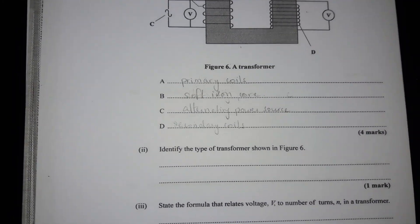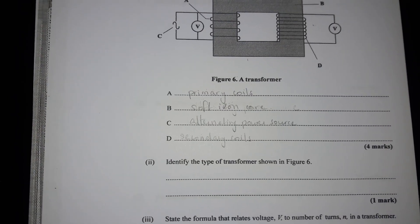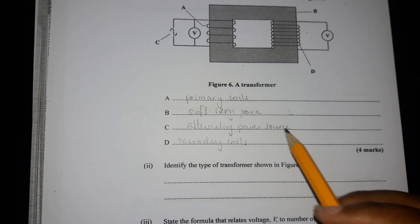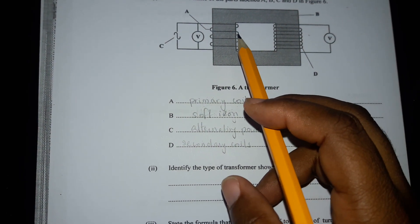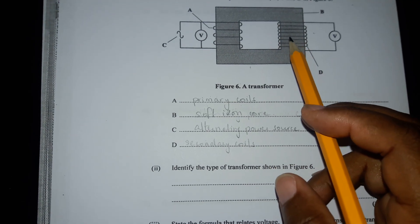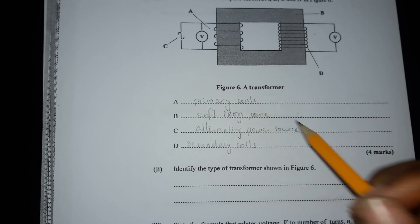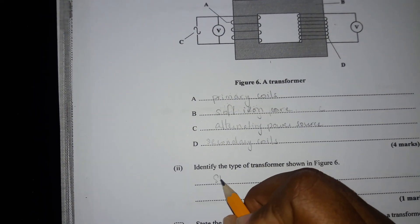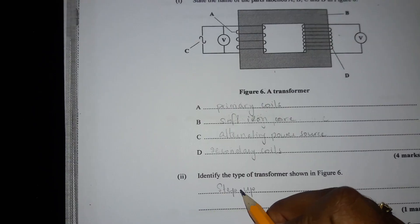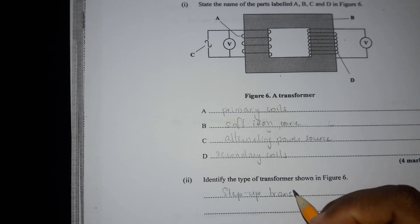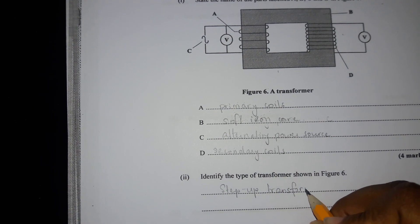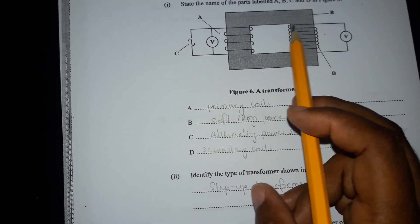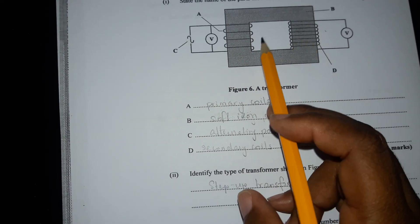Identify the type of transformer shown in Figure 6. This is a step-up transformer. You have less voltage here and more voltage here. An easy way to remember: less coils to more coils is a step up, and more coils to less coils is a step down.